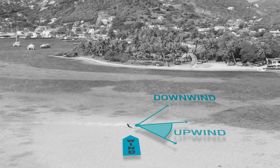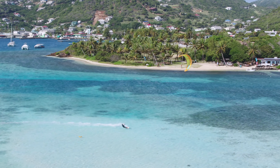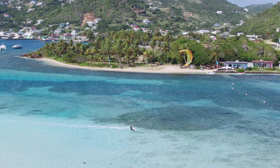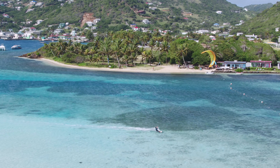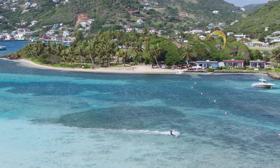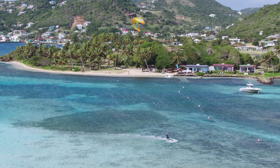To ride upwind means to be heading towards the direction of the wind at an angle. Be aware that you can only go against the wind up to a certain angle — no wind-driven object can travel directly against the wind. To reach a target directly upwind of your position, you'll have to perform several legs going upwind. In other words, you'll have to zigzag.